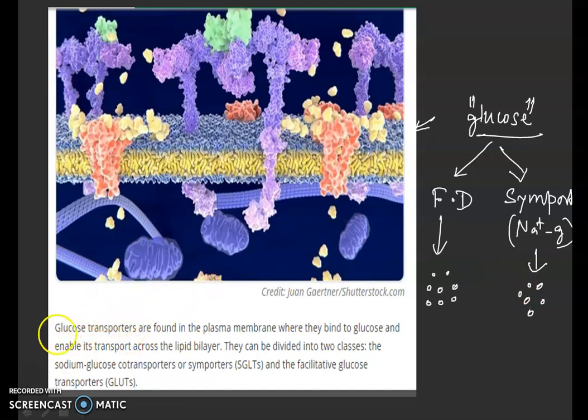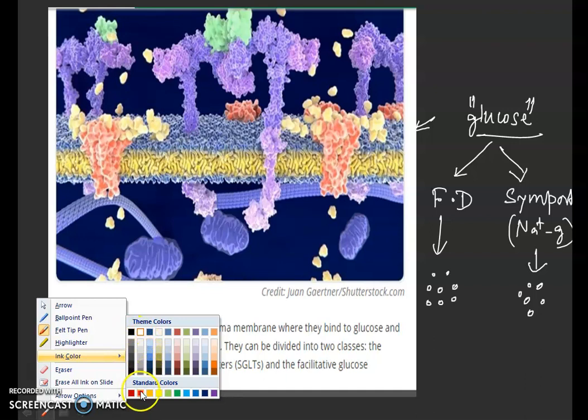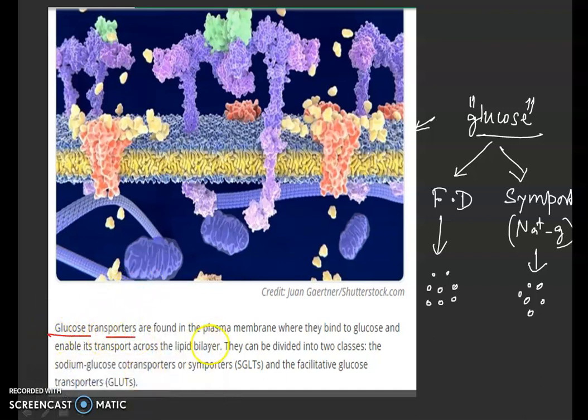Glucose transporters are found in the plasma membrane where they bind to glucose and enable transport across the bilayer. They can be divided into two classes: sodium-glucose cotransporter, or symporter, because both sodium and glucose move in the same direction inside the cell. Another way is facilitative glucose transporter with the help of GLUTs.